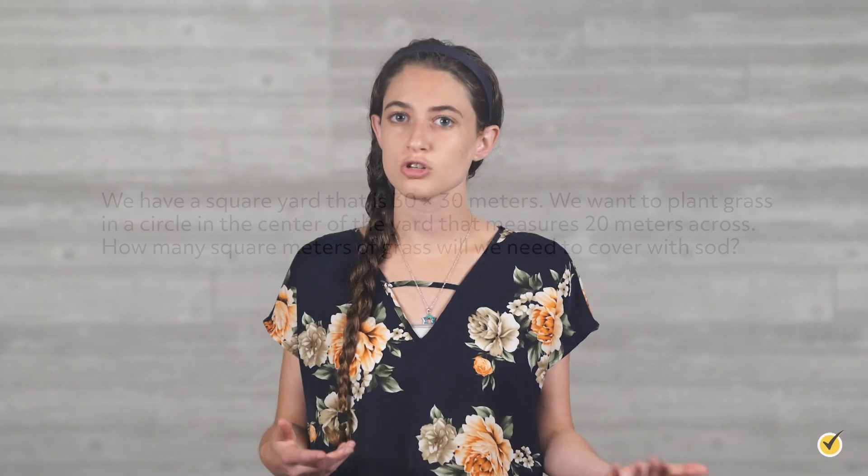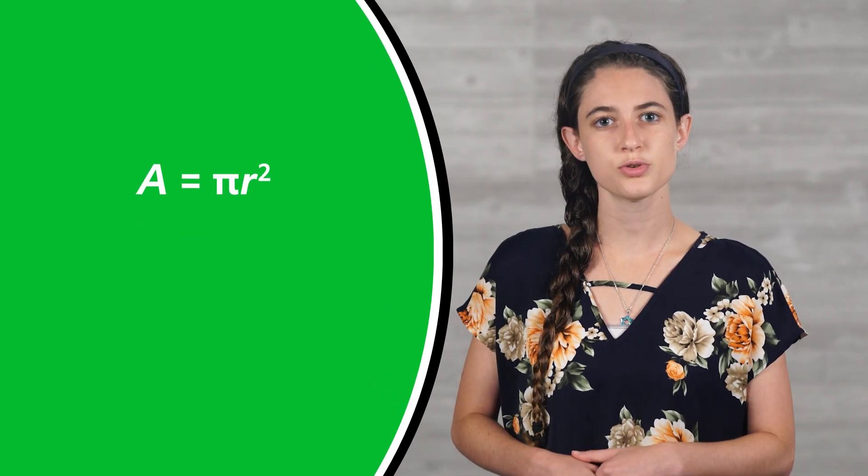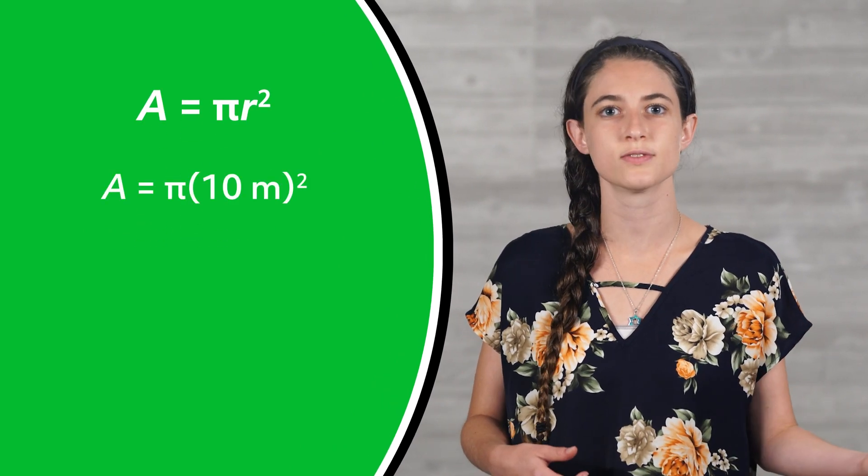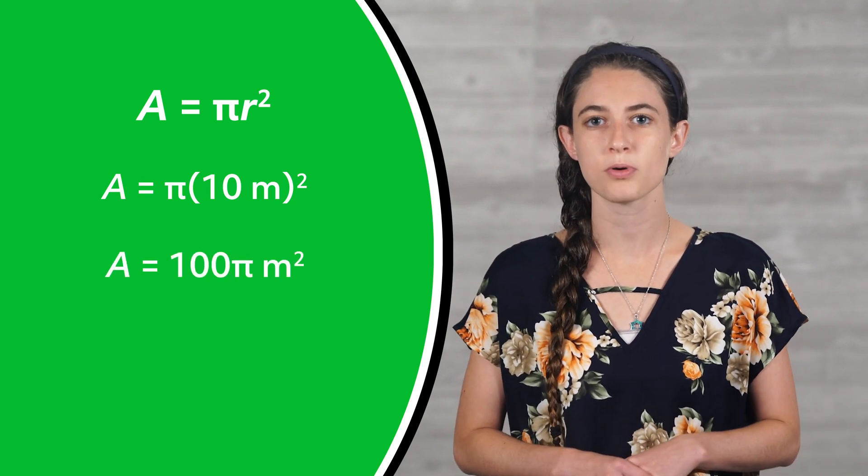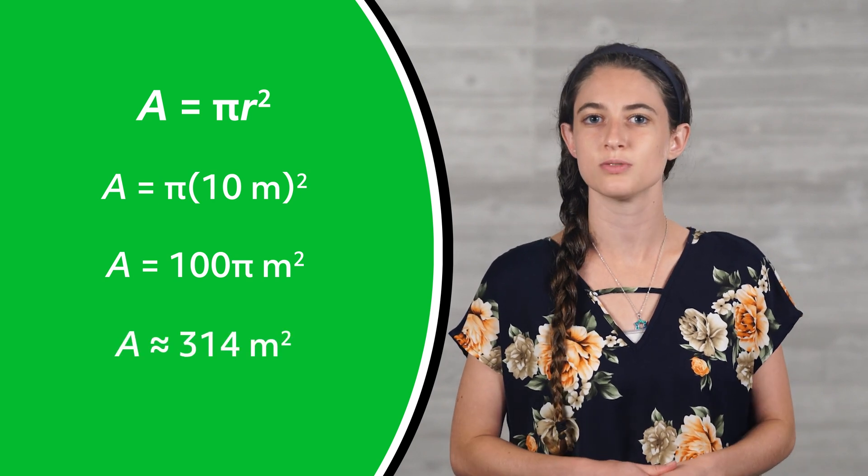First, we need to find the radius. The circle is 20 meters across, which is the diameter. The radius is half of that, so 10 meters. Now we just need to plug that into our formula. Area is equal to πr², so it's equal to π times 10 meters squared, which gives us an area of 100π meters squared. Finally, we multiply by pi on our calculator to get our approximate area of 314 meters squared. We need to buy a lot of sod.